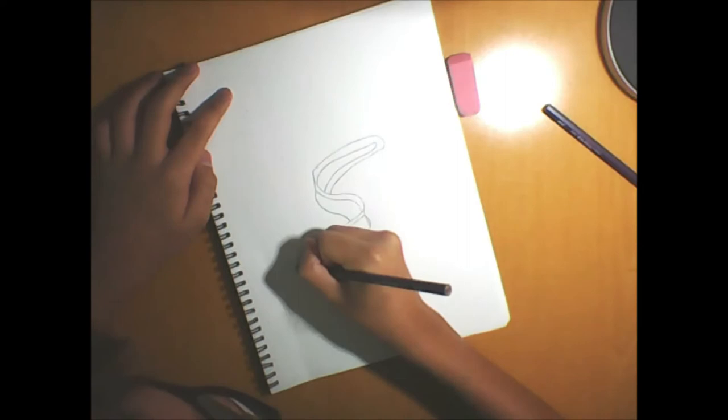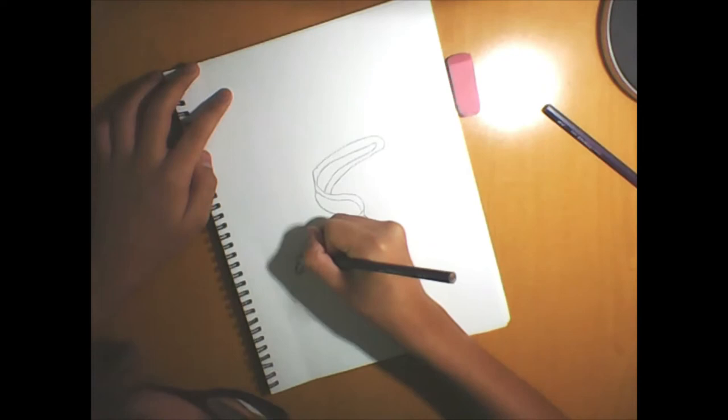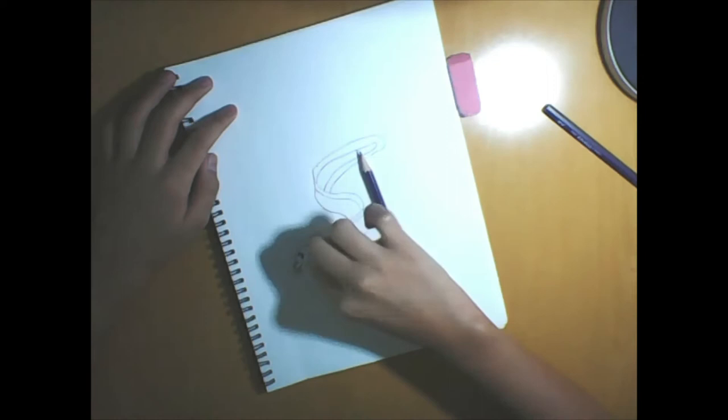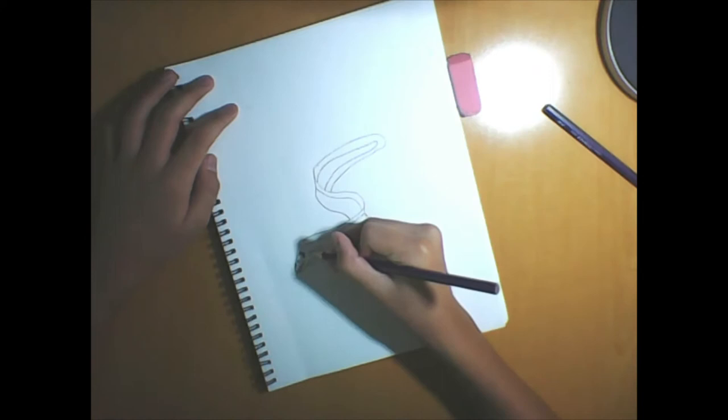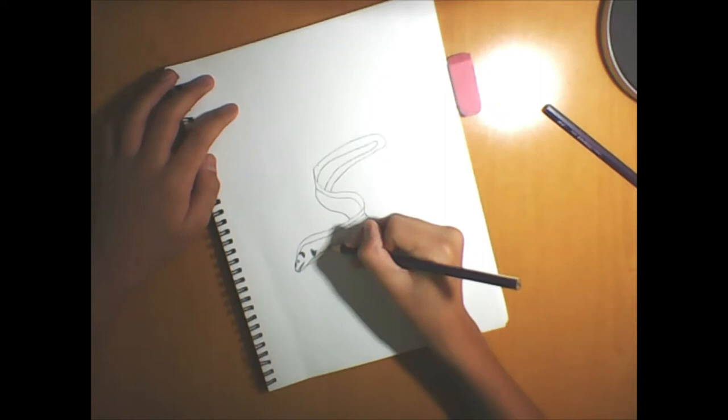Use the HB pencil again. We need to draw them rounded so it looks like the moray eel is rounded here. So, it looks as if it's going around this way. Like this. It's a little curve there. Same here.